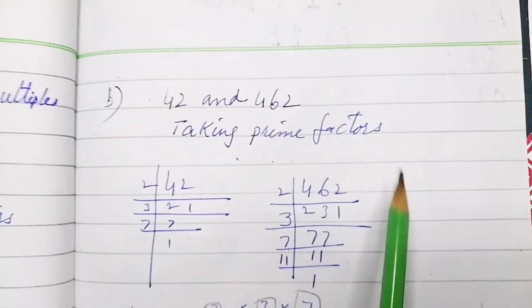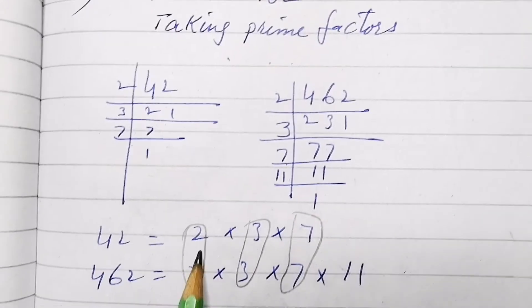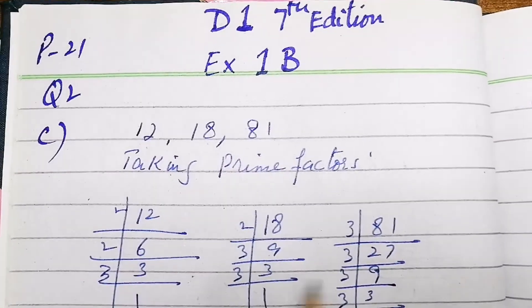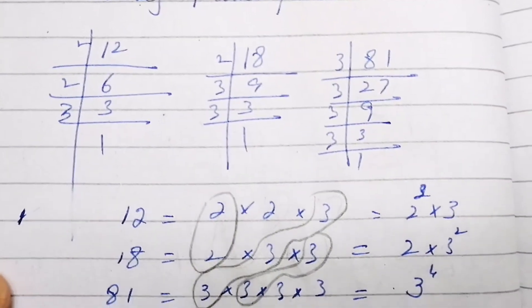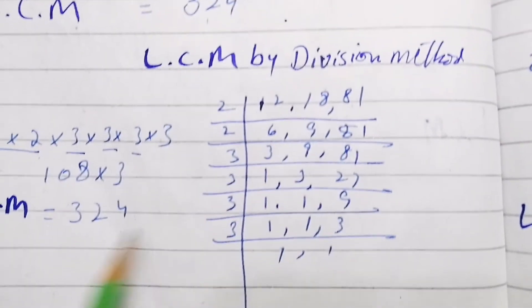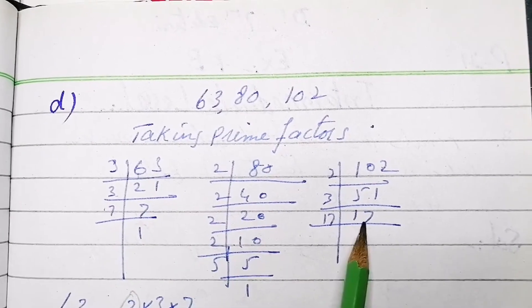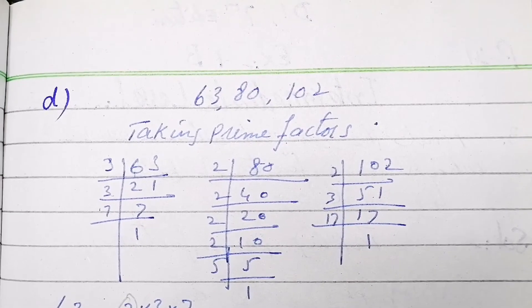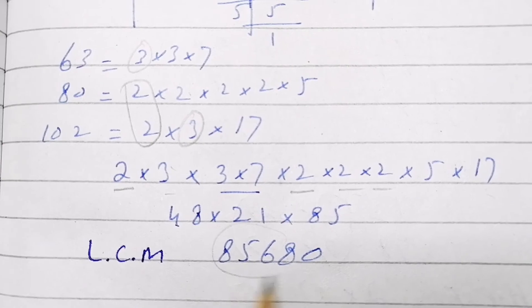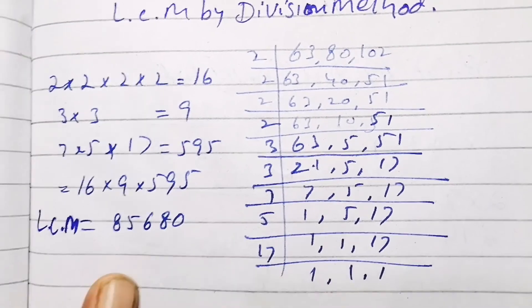For part B, 42 and 462 are given. Take their prime factors, find common and non-common factors, and write the answer. Any method gives the same result. For part C, 12, 18, and 81 are given — take prime factors separately, multiply common and non-common factors. You can also use the DVN method for LCM. That's all for today — see you in the next video.